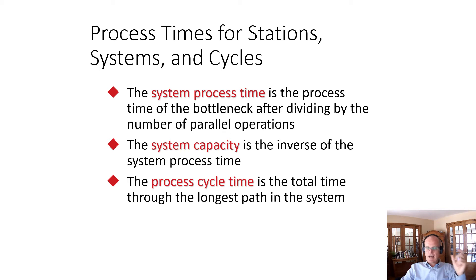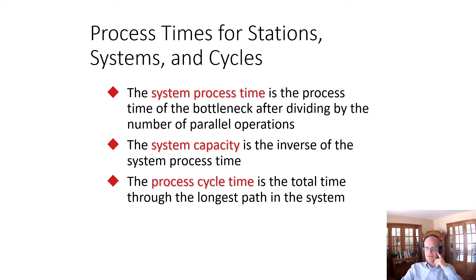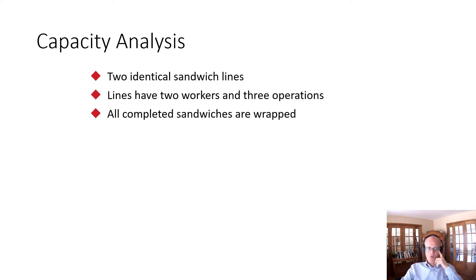The system process time is the process time of the bottleneck. The system capacity is the inverse of the system process time — so if the system process time is 10 minutes, the capacity is 60 divided by 10, which equals 6 units per hour. The process cycle time is the total time throughout the longest path in the system.